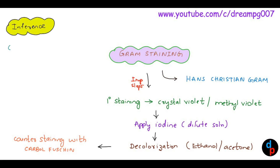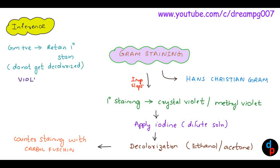What's the inference? Gram-positive organisms retain the primary stain — they do not get decolorized. Why? It's because they have a thick peptidoglycan outer cell wall. Hence, gram-positive organisms appear violet in color.